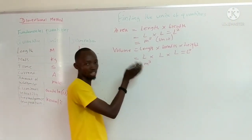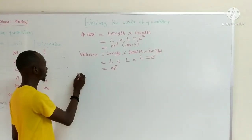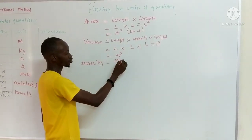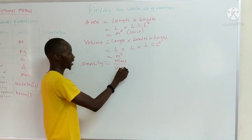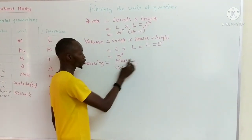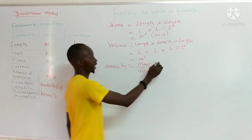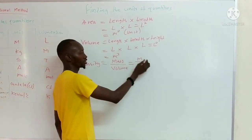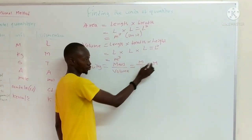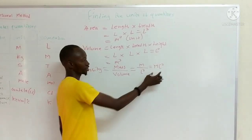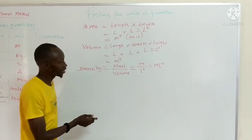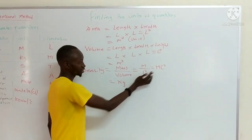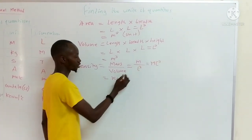Let's say density is also another quantity. Density, we have the formula to be mass over volume. The dimension of mass is M, and volume we have already as L cubed. Since the L³ power here is positive, when we bring it up it is going to be negative 3. So this is the dimension of density: ML⁻³. The unit of mass is kilograms and the unit of length is metres, so the unit of density is kg·m⁻³.